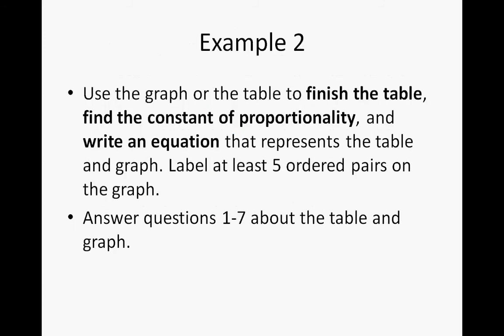For example 2, use the graph or the table to finish the table, find the constant of proportionality and write an equation that represents the table and the graph. Make sure you label at least five ordered pairs on the graph and then answer questions 1 through 7 about the table and the graph. This is going to take a little bit of time, so go ahead and pause the video, do example 2 and answering the 7 questions, and then continue.